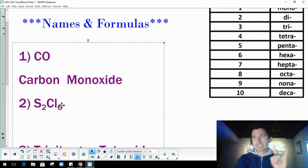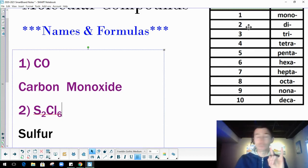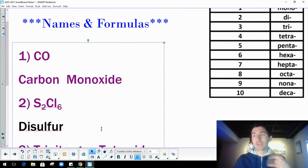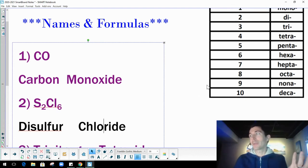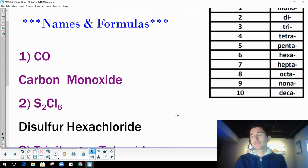So sulfur and chlorine, two sulfurs and six chlorines. So if I have two sulfurs, again, just like the first one, I'm going to put sulfur first. Since I have two of them, my prefix for two is di. So I'm going to go disulfur. And then I'm going to end this one with chloride. Six is hexa. Your hexagon's got six sides. So I'm going to go disulfur hexachloride. Here we go. Done. Not too bad.